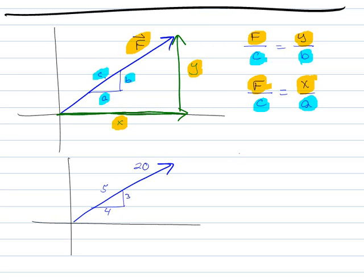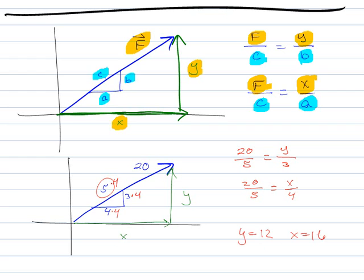So now you could formally go through here, and you can say 20 is to 5, as Y is to 3. And you could work that out, and then you could say 20 is to 5, as X is to 4. And you could work that out. But again, don't work harder than you have to. Most people will just look at this, and they'll say, oh, to get from 5 to 20, I need to go times 4. So that means I need to multiply all these by 4 as well. So that means that Y is 12, and X is 16. And that's what you would get by working out those equations above as well.